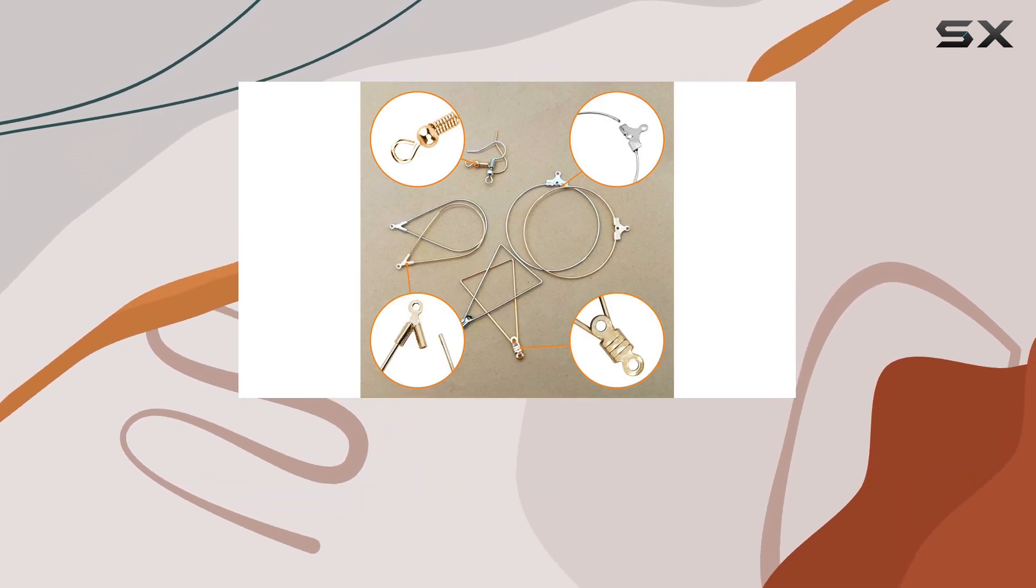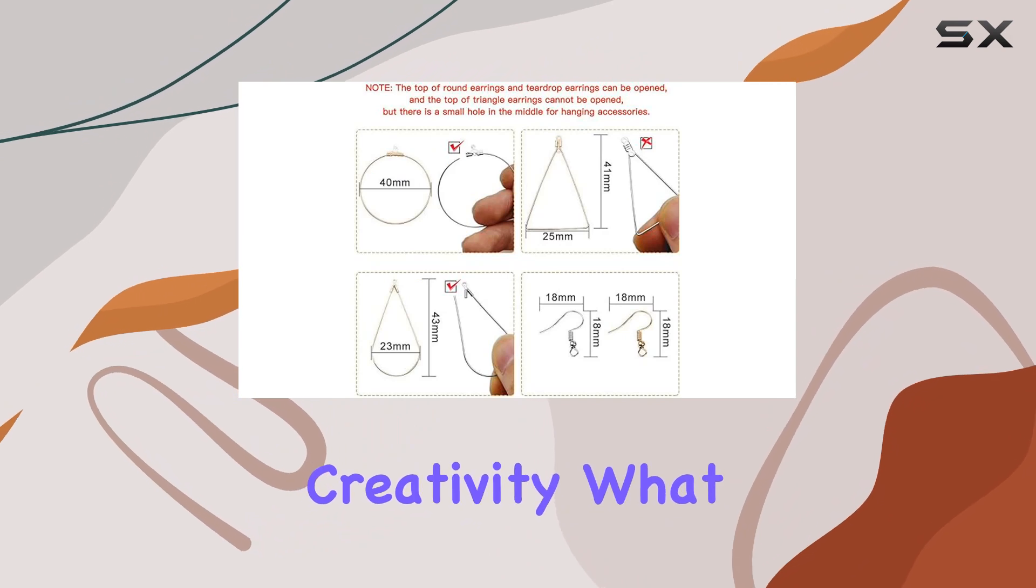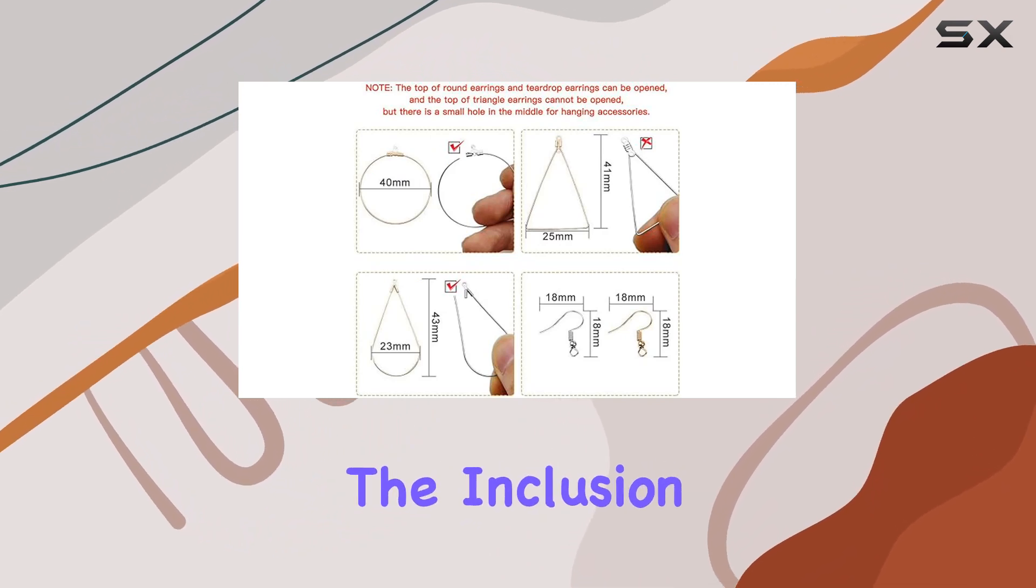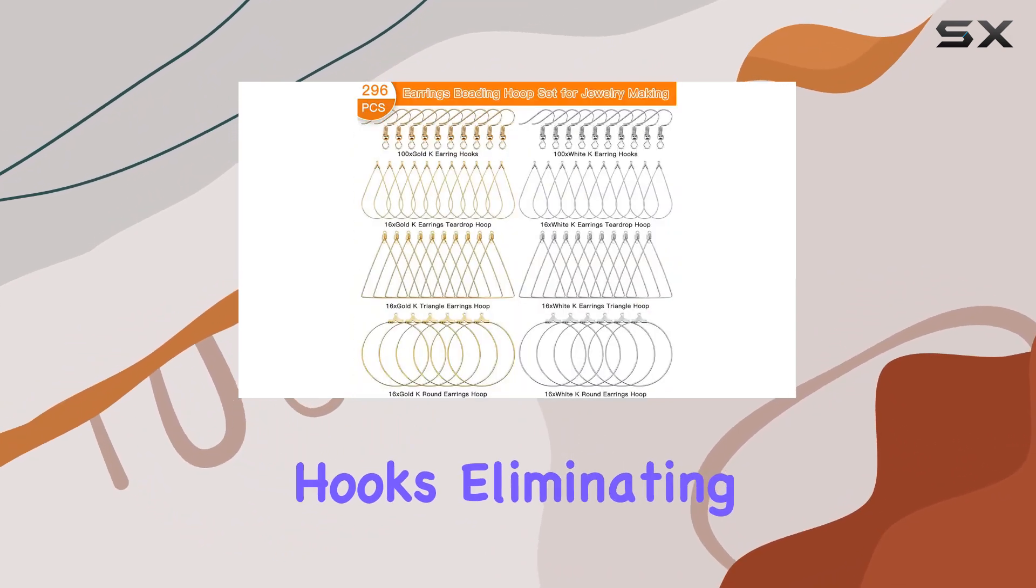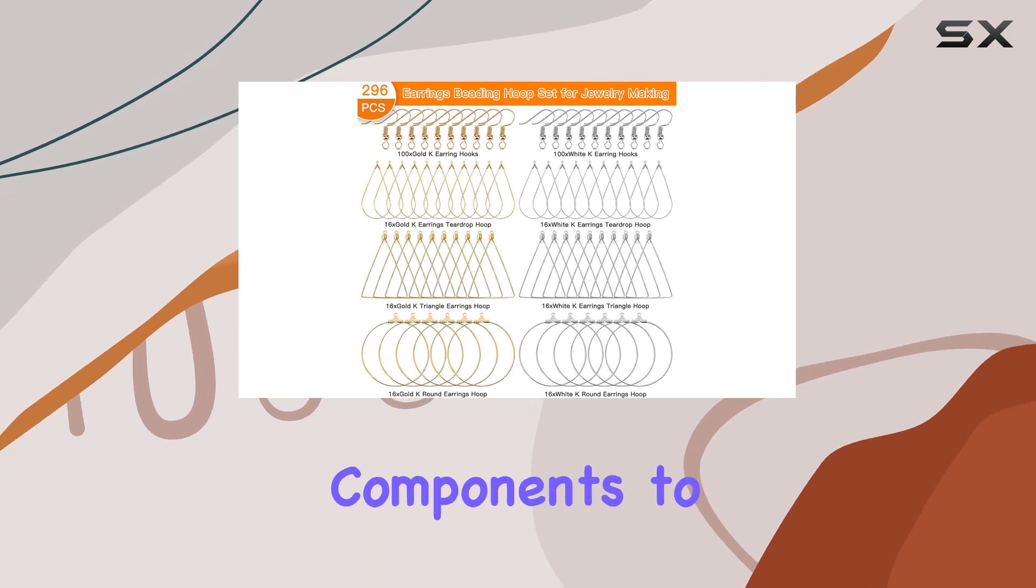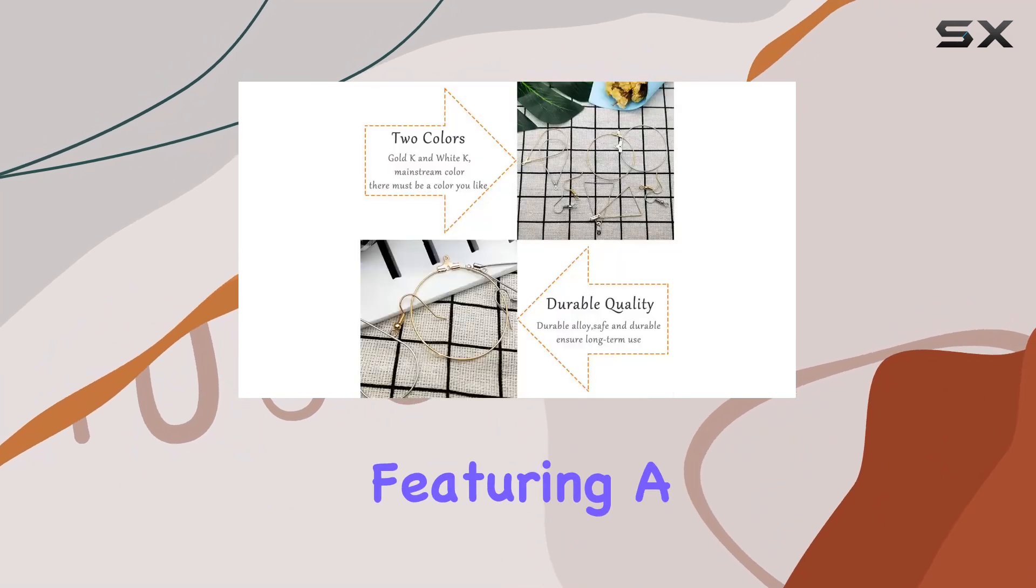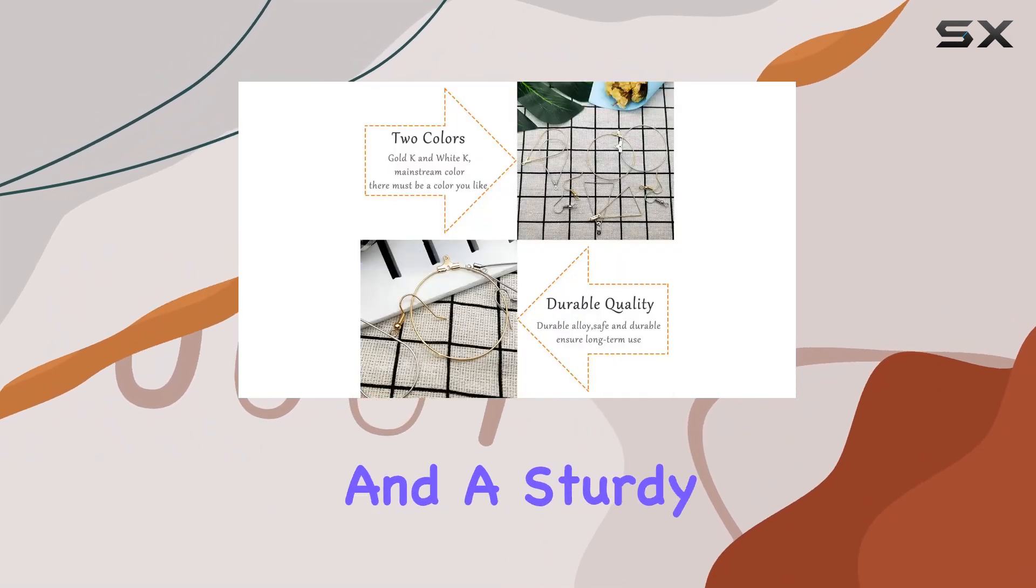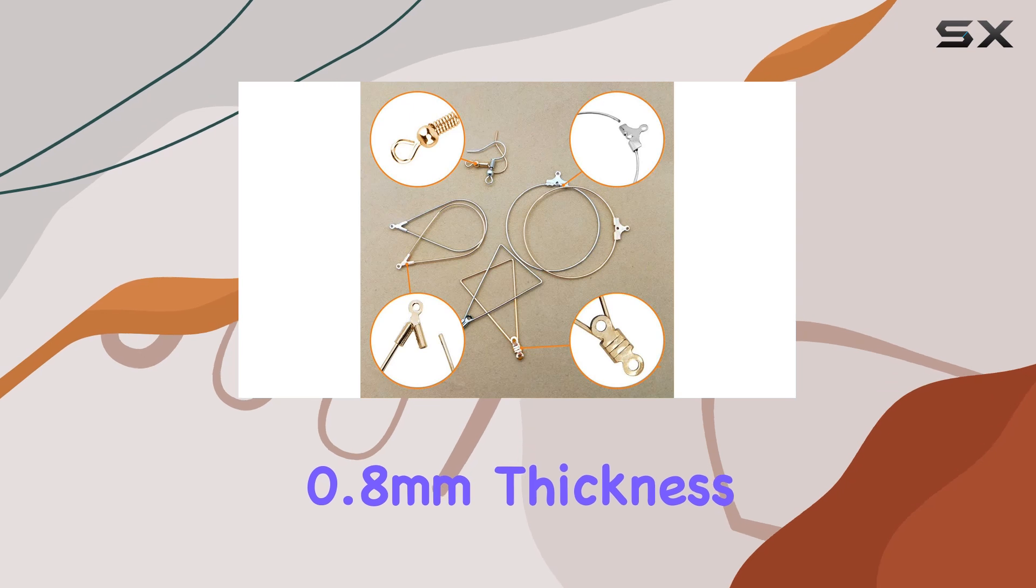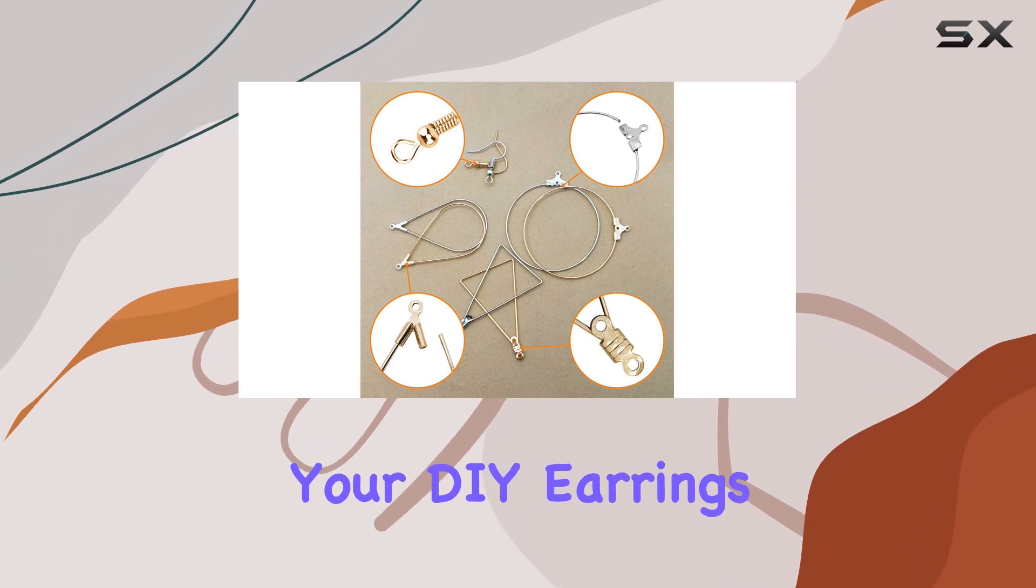What makes this kit stand out is the inclusion of 200 earring hooks, eliminating the need to purchase additional components to complete your projects. These hooks are high quality, featuring a comfortable 18 millimeters length and a sturdy 0.8 millimeters thickness, ensuring that your DIY earrings will not only look great but also be durable and secure.